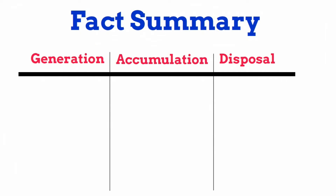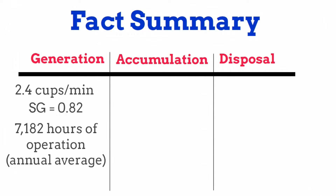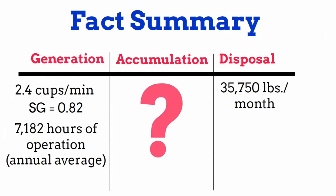So let's look at our facts. We have the waste generation rate, the specific gravity of the waste, as well as the hours of operation. We also have the amount that we're disposing of each month from this waste tank, but we do not know any accumulation rates. So this is what we're going to be solving for.